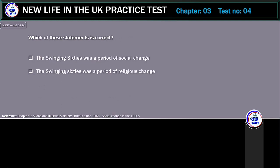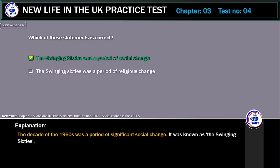Which of these statements is correct? The Swinging Sixties was a period of social change, or a period of religious change? The correct answer is: the Swinging Sixties was a period of social change. The decade of the 1960s was a period of significant social change, known as the Swinging Sixties.